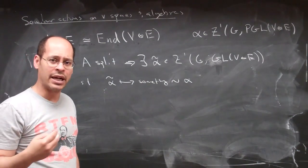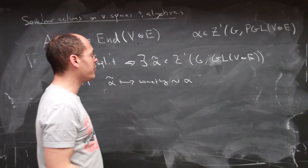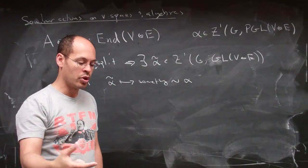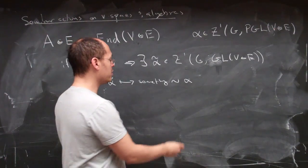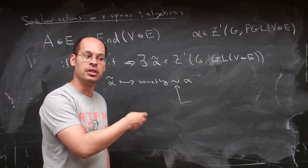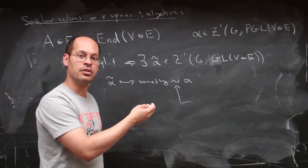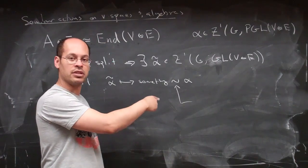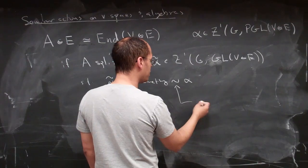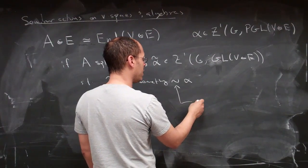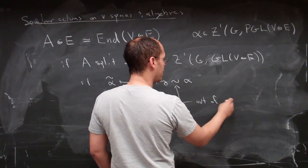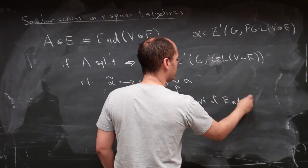But how is co-homologousness actually defined? It's defined by altering your action by taking some automorphism of the algebra. So this means that I can really turn the alpha tilde action into the alpha action, or the image of the alpha tilde action into the alpha action, by doing some changes of coordinates, by an automorphism of the algebra into morphisms of V tensor E.